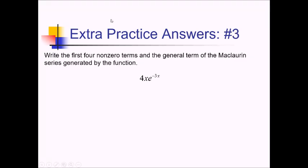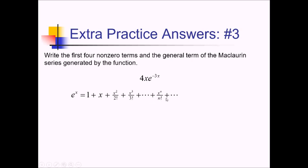For this problem, we want the first four non-zero terms and general term of a Maclaurin series for this function. Let's start with the Maclaurin series for just e to the x: that's 1 plus x plus x squared over 2 factorial plus x cubed over 3 factorial, and more generally, x to the n over n factorial.